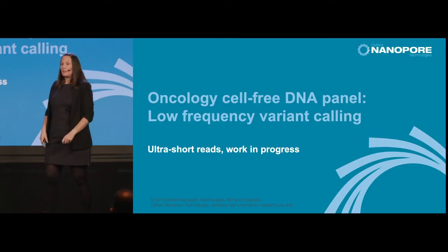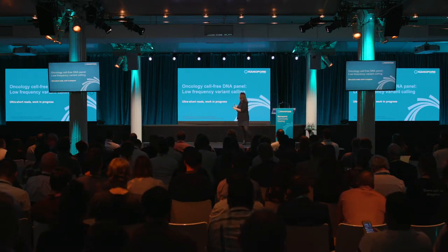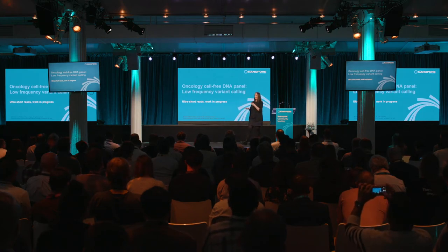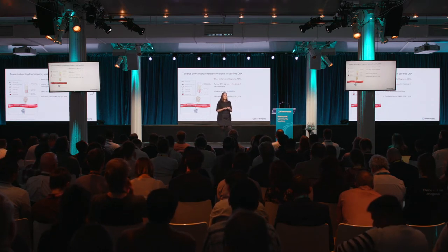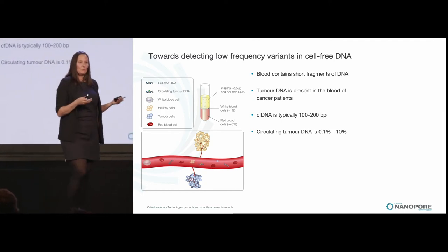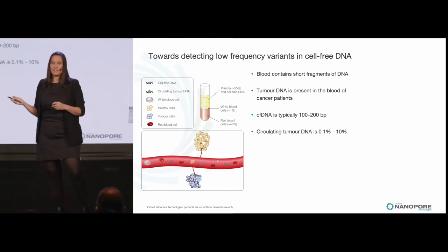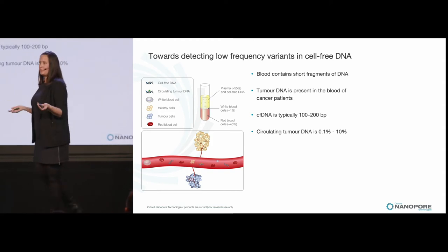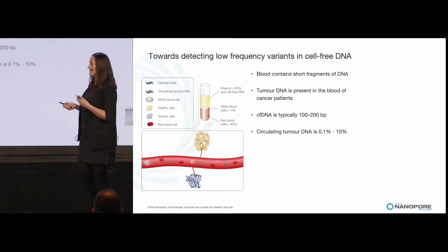The next project I'm going to talk about is now ultra-short reads, and we're going to use low-frequency variant calling to showcase these on an oncology cell-free panel. Many of you probably know that in our blood there's lots of cell-free DNA — DNA that cells release into the blood when they die, which is perfectly normal. If you have a tumor, that DNA is also released into the blood when tumor cells die. You can tell which DNA comes from the tumor by looking at the cancer-related mutations. You need a test that's extremely sensitive to find these low-frequency variants.